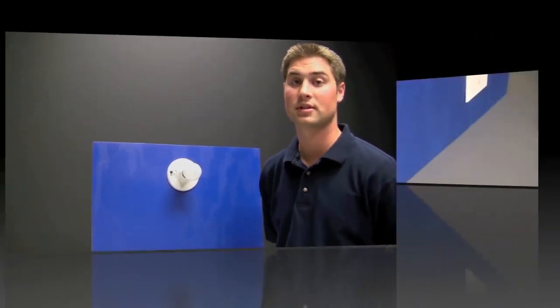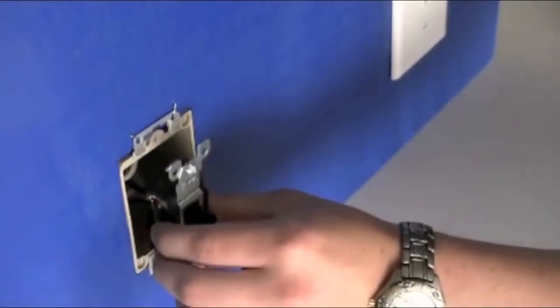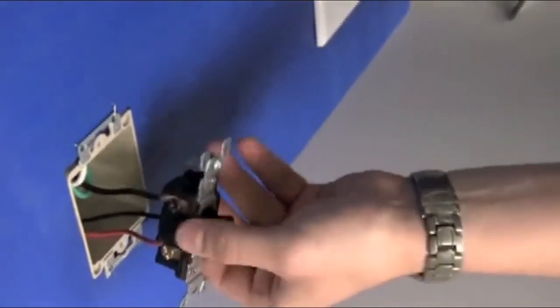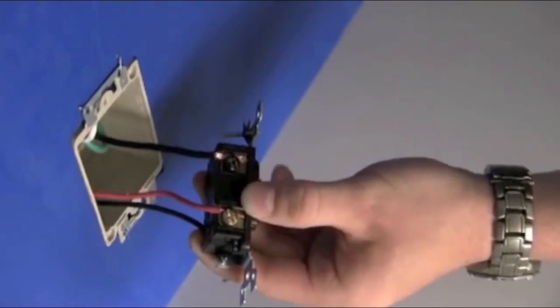Now that we've covered those topics let's get started with installing the timer. We're going to need to locate the common wire on our three-way switch. To find the common wire remove the switch from the wall and locate the odd colored screw. That will be the common wire.